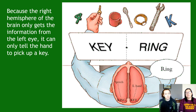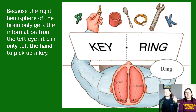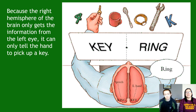As for why they picked up the key: the right hemisphere only gets information from the left eye. The left eye saw the word 'key,' sent that to the right cerebral hemisphere, which then told the left hand to pick up a key. It cannot tell the hand to pick up the ring because it genuinely doesn't know the word 'ring' is there. It's hard to comprehend — half your brain knowing something the other half doesn't.